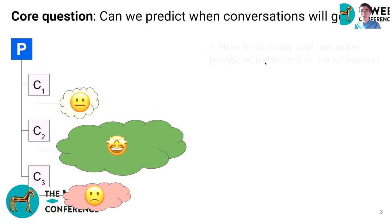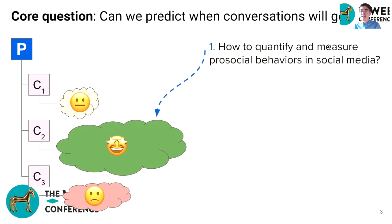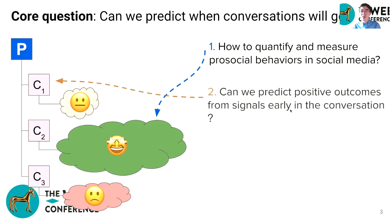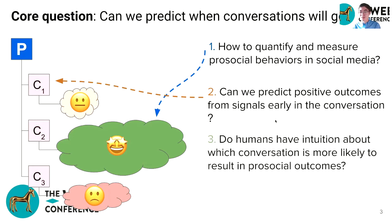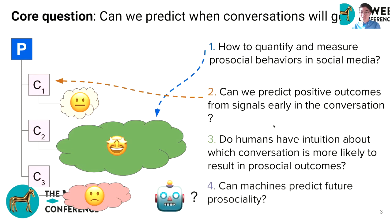We want to know how to quantify and measure prosocial behaviors in social media. We want to know how we can predict positive outcomes from signals early in the conversation. We also want to know whether humans have intuition about which conversation is more likely to result in positive outcomes, and how well machines can predict future prosociality.